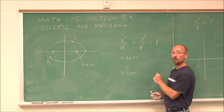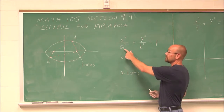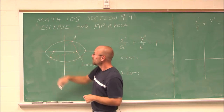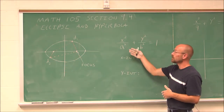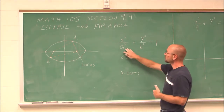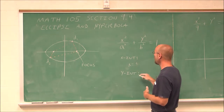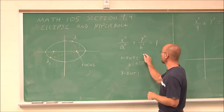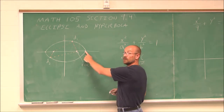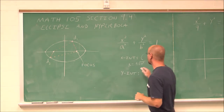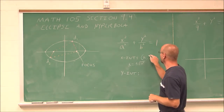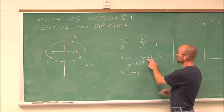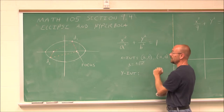When we have an ellipse centered at the origin, the x-intercepts are defined by the values of a. We can see there's an x-intercept on each side. We take plus or minus the square root of a squared. So our intercepts, because it's centered at the origin, are (a, 0) to the right and (negative a, 0) to the left.